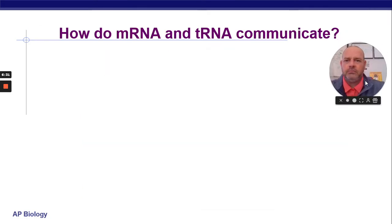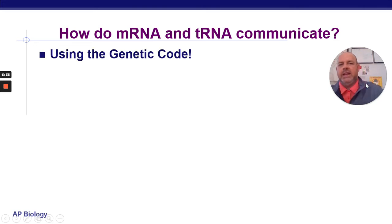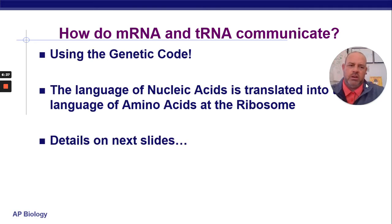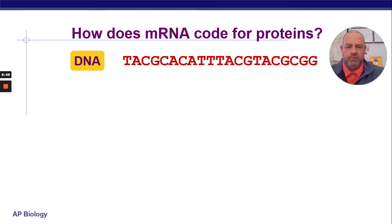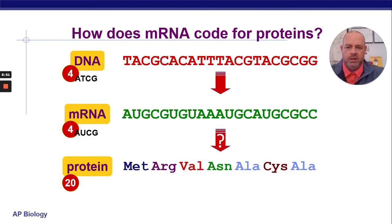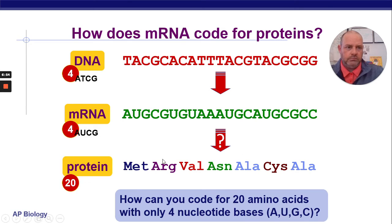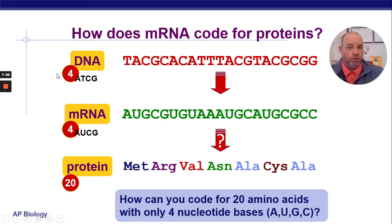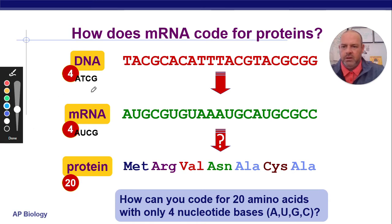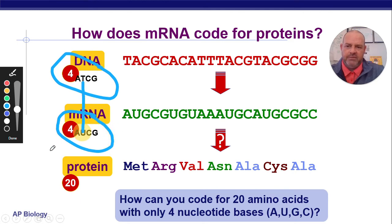How do mRNA and tRNA communicate? They use the genetic code — we have to switch from the language of nucleic acids to the language of amino acids. We have four DNA bases and four RNA bases with a small change from T to U. This sequence gets converted through complementary base pairing — if there's an A in DNA, we put a U in RNA instead of a T.